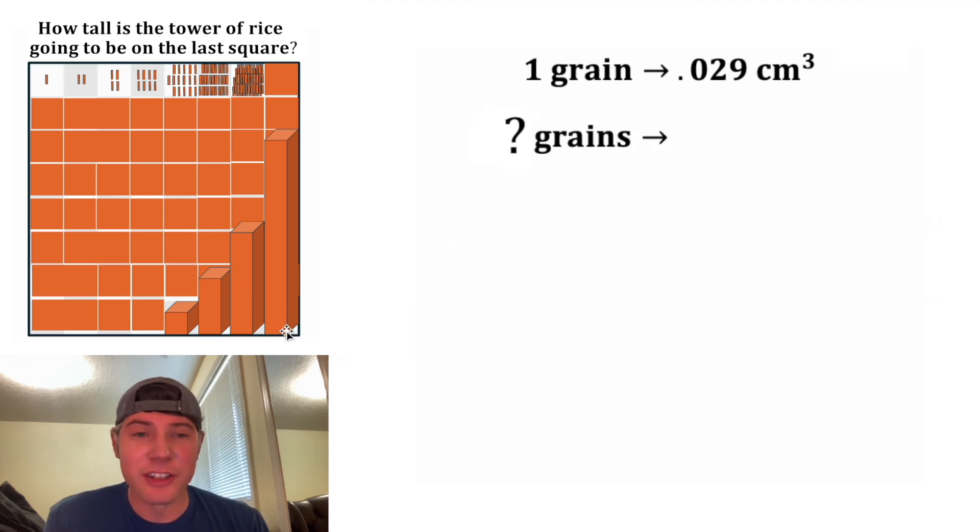Now how many grains of rice are on this last square? We start out at 1, which is 2 to the 0, and then 2, which is 2 to the 1, 4, which is 2 to the 2, 8, which is 2 to the 3, and we're going to go 2 to the 4, 2 to the 5, 2 to the 6, 2 to the 7. By the time we get through the entire chessboard, it's going to be 2 to the 63rd power grains of rice.